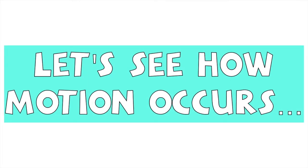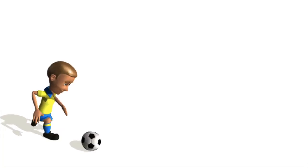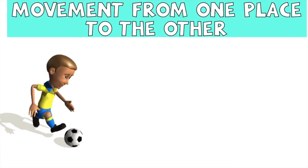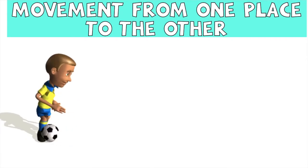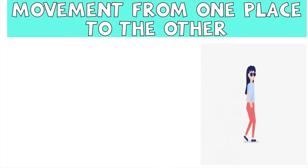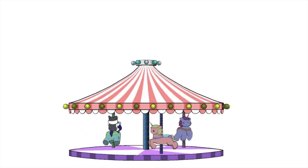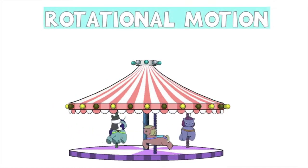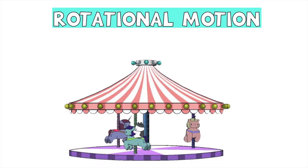Let's see how motion occurs. Are you ready? Let's have the first example — look at the boy kicking the ball. The motion that occurs here is movement from one place to the other. Let's have another example: an apple fell on the ground. This is a movement from one place to the other. How about this one? As you can see, the movement is in circular mode, so the motion that occurs here is rotational motion.